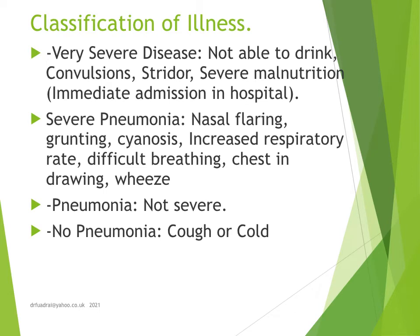As far as classification of illness is concerned, there are four types: very severe disease, severe pneumonia, normal pneumonia, or no pneumonia at all. Very severe disease is ascertained when the child cannot drink, has convulsions, stridor, or severe malnutrition — requiring immediate hospital admission. In severe pneumonia, there is nasal flaring, grunting, cyanosis, increased respiratory rate, difficulty breathing, chest in-drawing, and wheeze. In some cases pneumonia is not severe, and clinical assessment guides treatment.